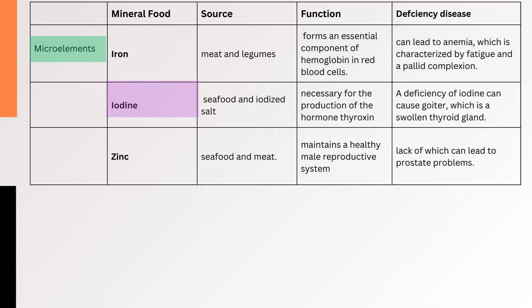2. Iodine — Iodine, which is found in seafood and iodized salt, is necessary for the production of the hormone thyroxin. A deficiency of iodine can cause goiter, which is a swollen thyroid gland.